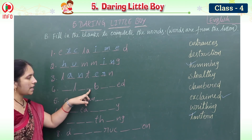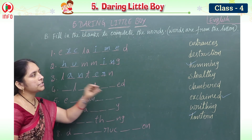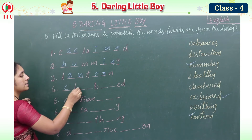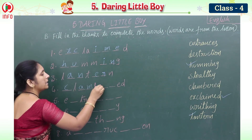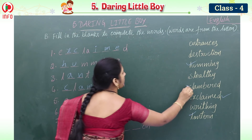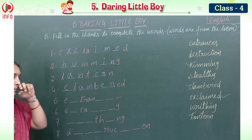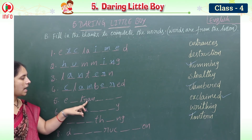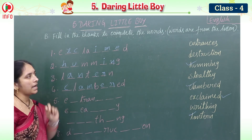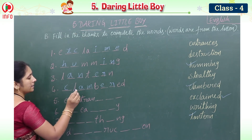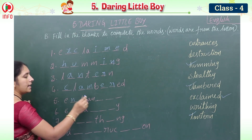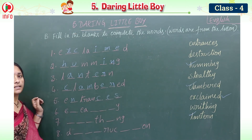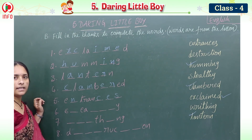Next: _ L _ _ B _ _ E D is clambered — C-L-A-M-B-E-R-E-D. And E _ T R A N _ _ _ _ is entrances — E-N-T-R-A-N-C-E-S.